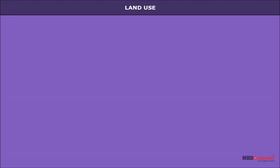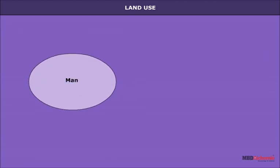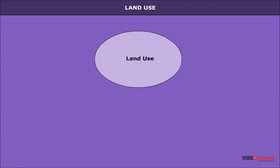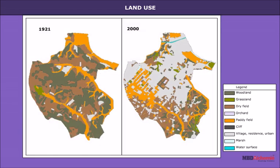Land use: The use to which land is put both by man and nature is together described as land use. The proportion of land put to particular use and its distribution over an area or the world is known as land use pattern.